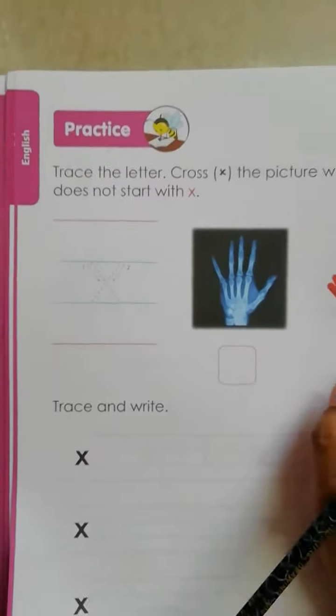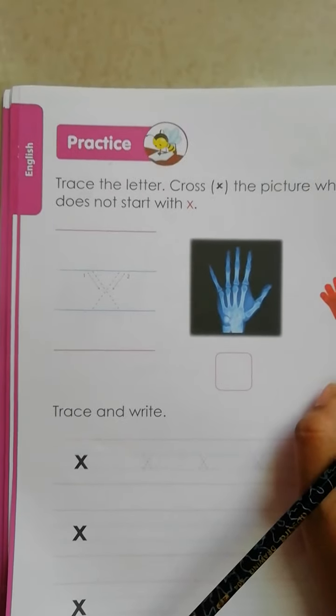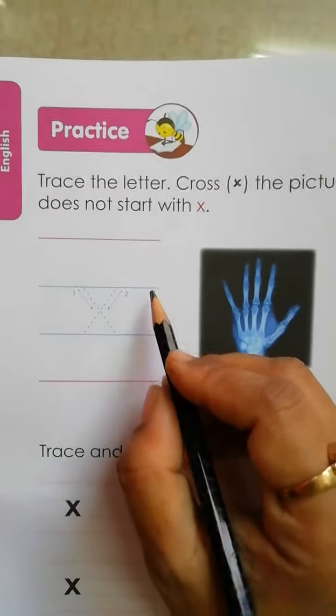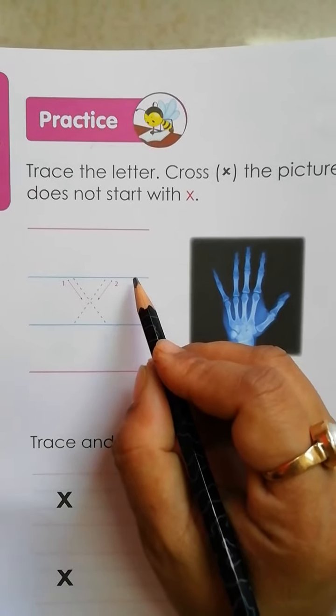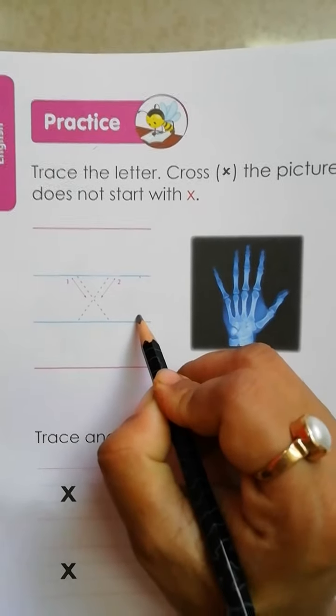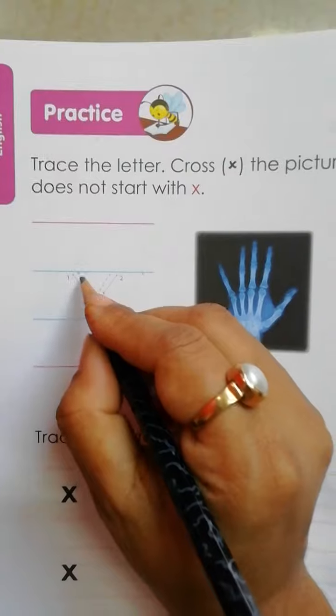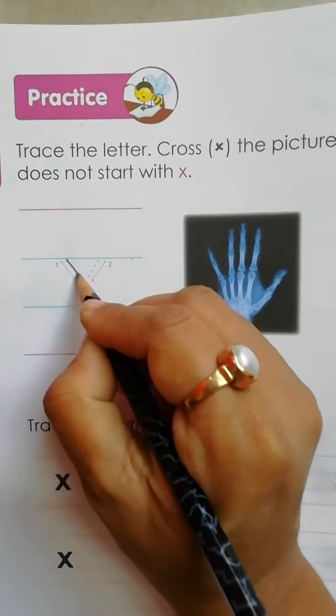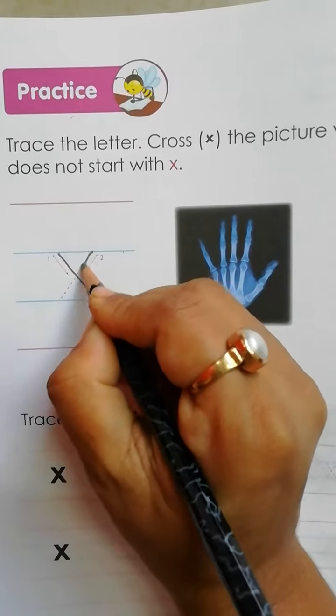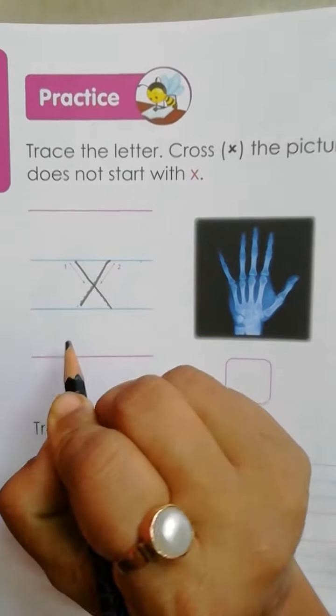Now, how to trace small letter x. We have to trace small letter x between two blue lines. First, slant line, again slant line, look like cross.